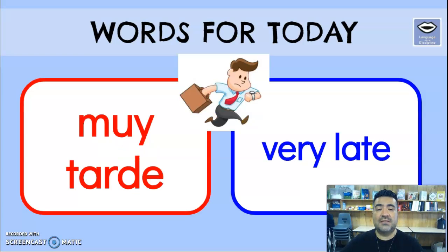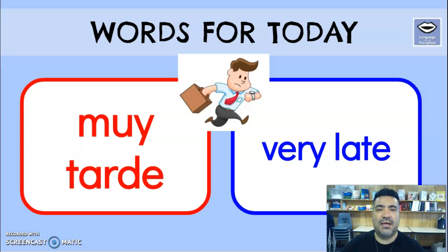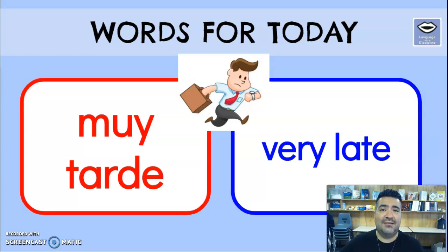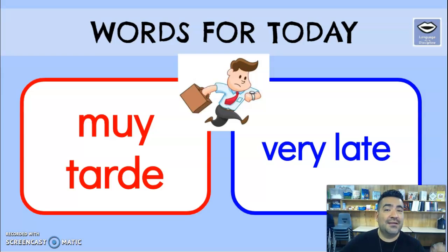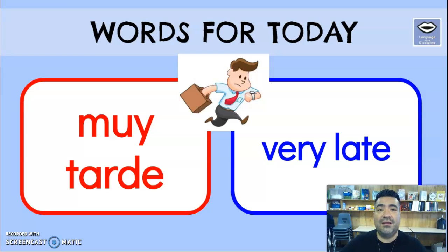Here's a phrase: 'Muy tarde.' Repeat that — 'muy tarde.' One more time: 'muy tarde.' It simply means 'very late.' Next morning, you can tell mom and dad: let's go, we got to go to school because we're going to be 'muy tarde.'